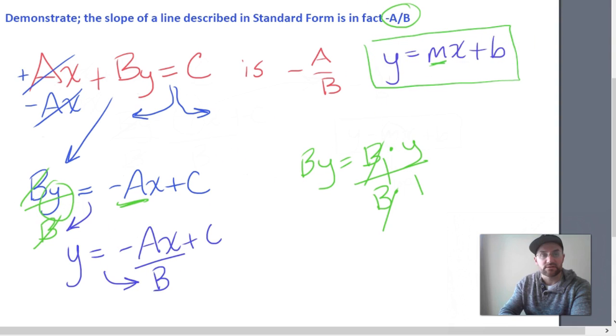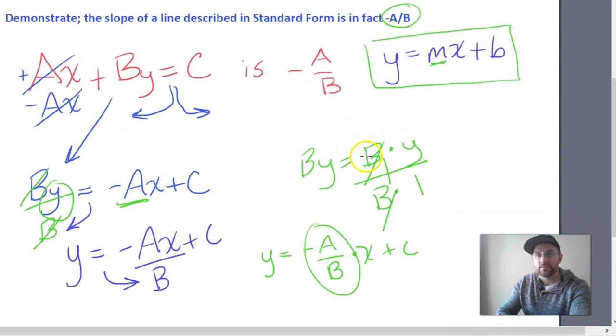So this can be rewritten in a way that makes a little more sense and looks easier to interpret, and we'll rewrite it as y equals negative A over B times x plus C. So what's the coefficient to x here? Negative A over B.